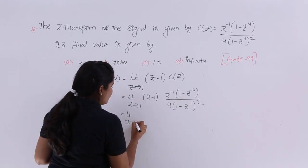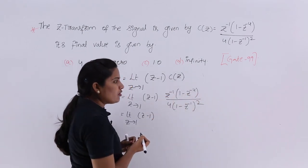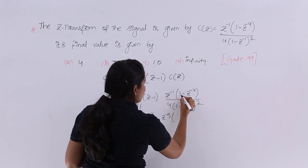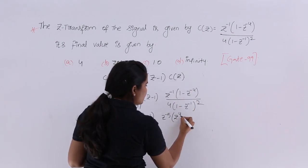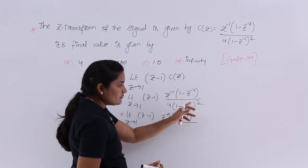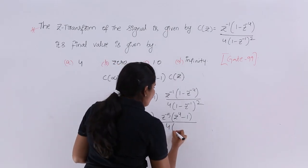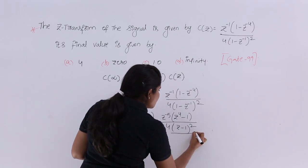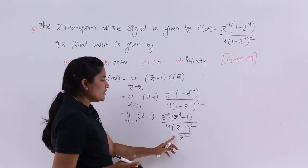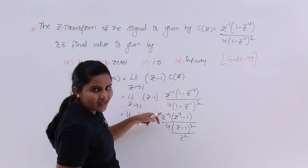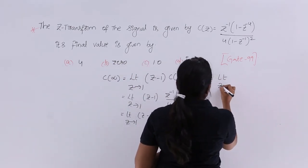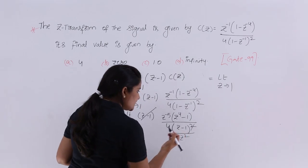Taking Z⁻⁴ as a common factor from the numerator gives Z⁻⁵ into (Z⁴ - 1). For the denominator, taking Z⁻¹ as 1/Z, the term 4(1 - Z⁻¹)² becomes 4(Z - 1)² divided by Z². That Z² in the denominator moves to the numerator, multiplying with Z⁻⁵ to give Z⁻³. The (Z - 1) factor from the theorem now cancels with one (Z - 1) in the denominator.